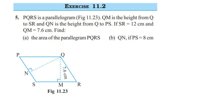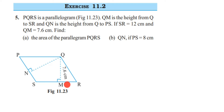Hey everyone, here's a question on Exercise 11.2, from the chapter Perimeter and Area of Class 7, fifth question. The question is: PQRS is a parallelogram (figure 11.23). QM is the height from Q to SR, and QN is the height from Q to PS.